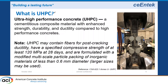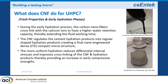What is UHPC? I'm pretty sure everybody in this room knows. It's a cementitious material that is a composite with enhanced strength, durability, and ductility compared to high performance concretes. UHPC normally contains fibers — discrete fibers — with a minimum compressive strength of 17,000 psi at 28 days, modified particle packing with coarse aggregates typically less than 0.6 millimeters, though sometimes they can be larger.